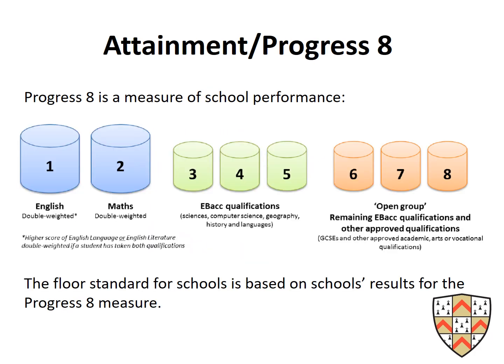Attainment 8 and Progress 8 are measures of school performance. English and Maths are double weighted, so grades in those are multiplied by two. Then three EBacc qualifications and three open group qualifications are added, and the total is divided by ten to find the average. Progress 8 is a measure of students' progress for schools. Students don't need to worry about this particularly — they just need to focus on maximising their grades across their subjects.